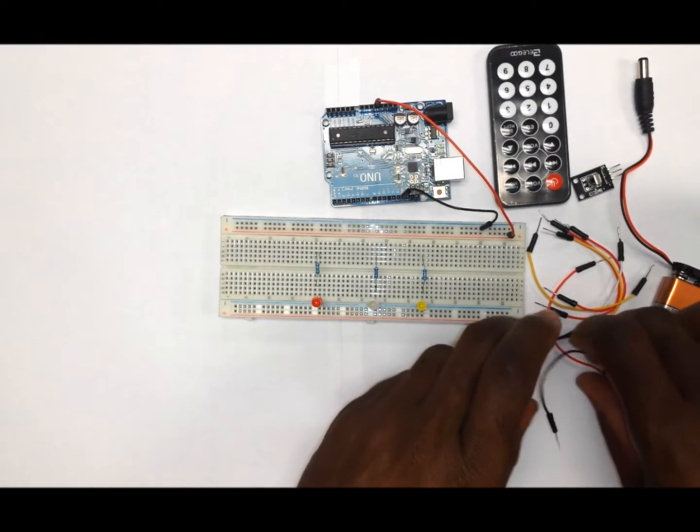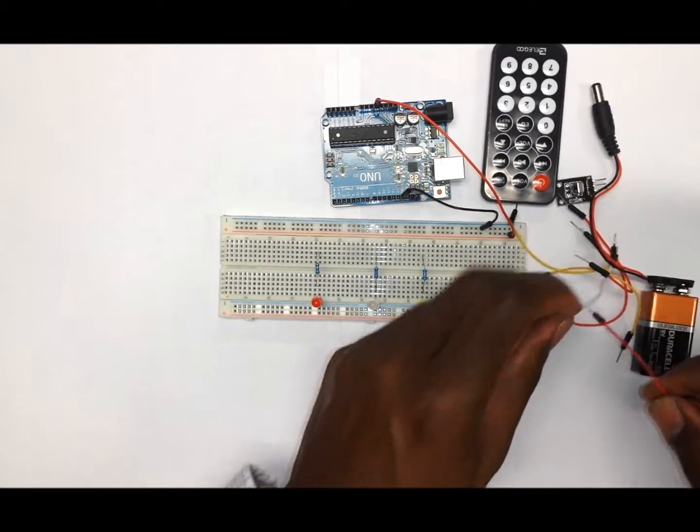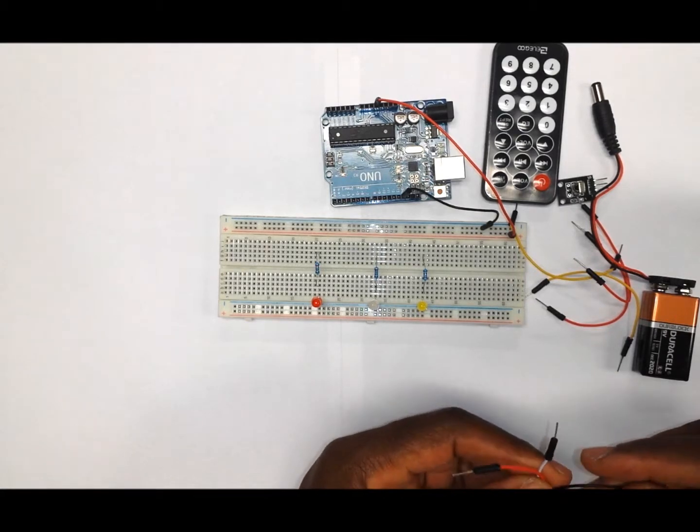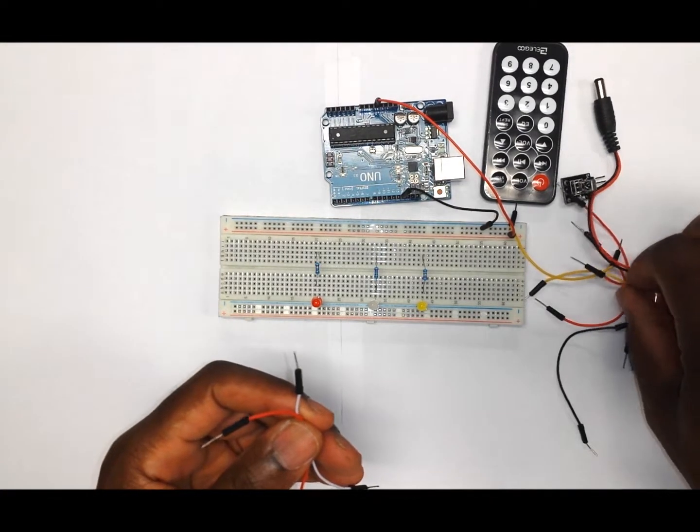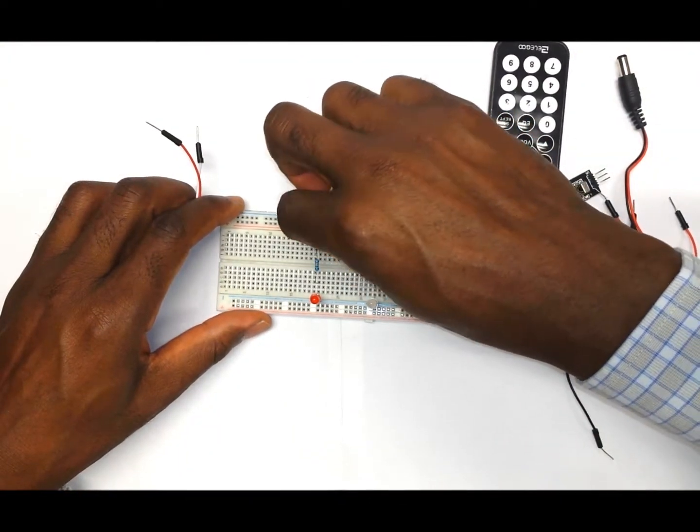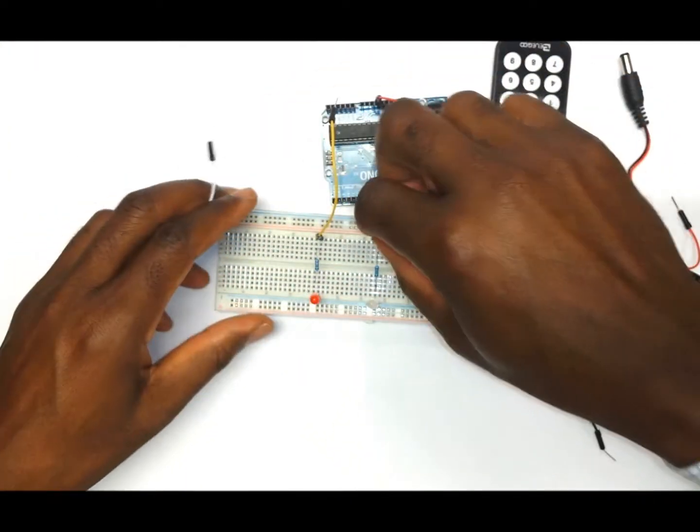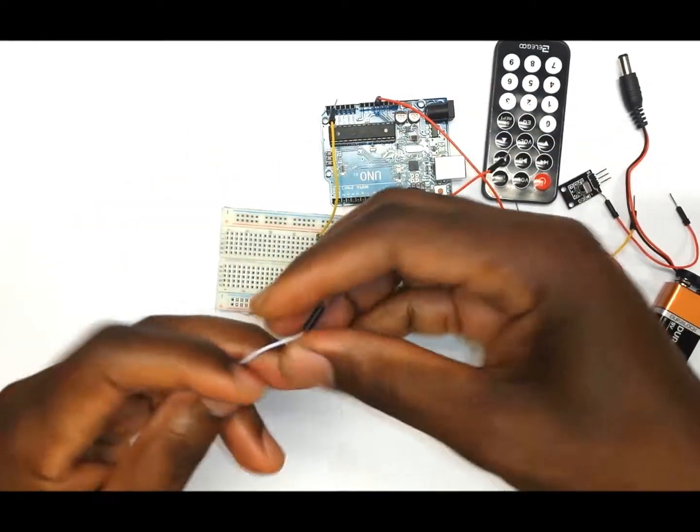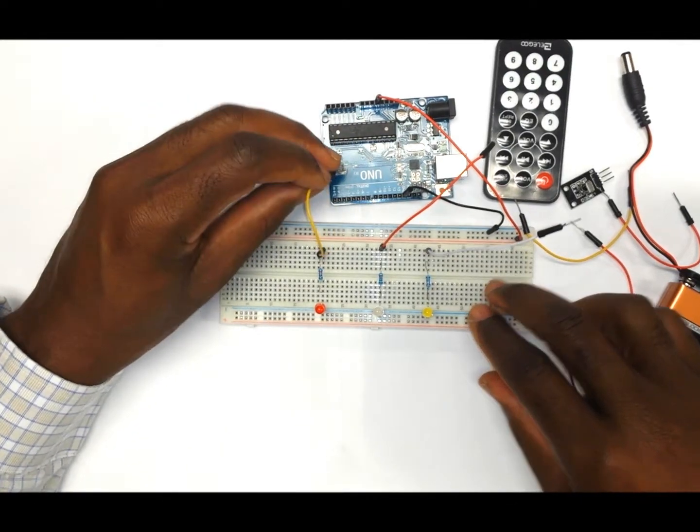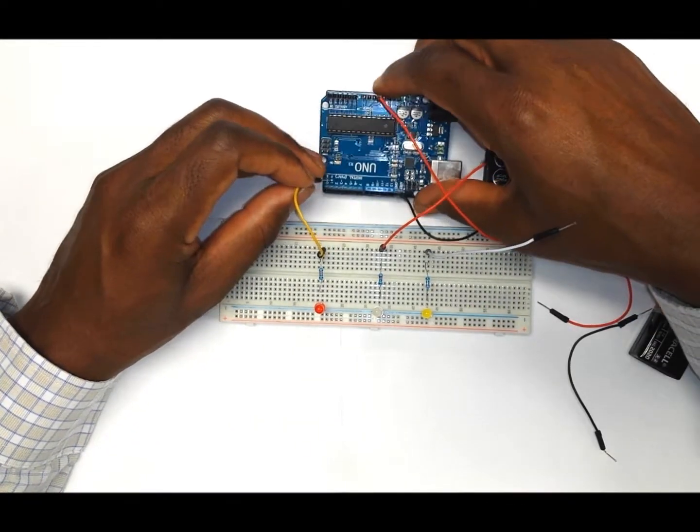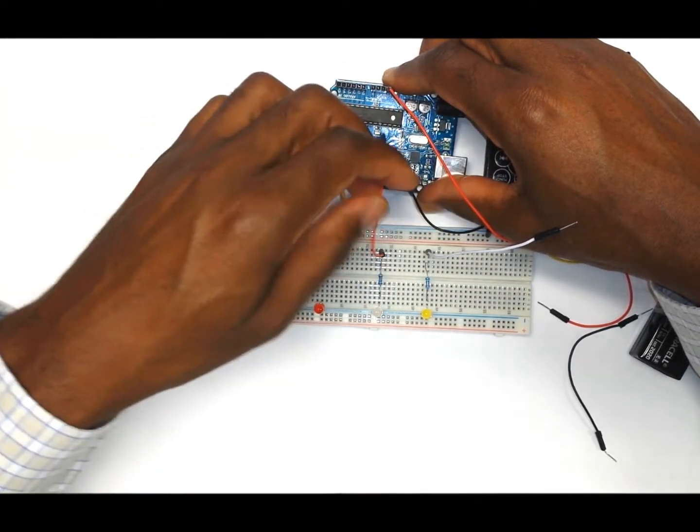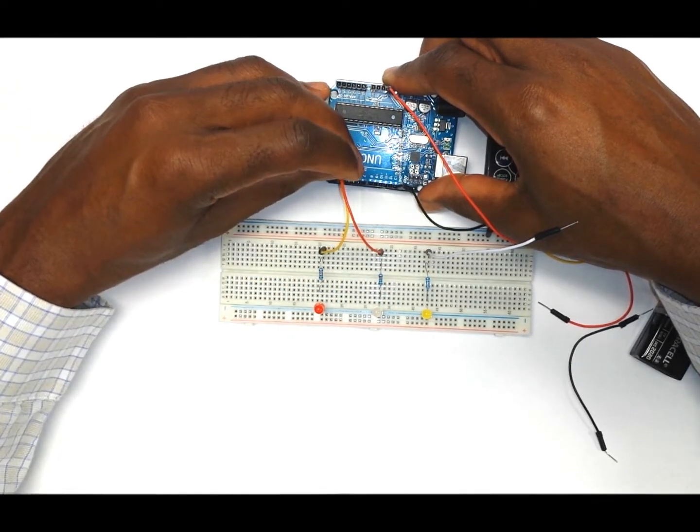The next thing that we want to do is to put the wires that are going to connect the LEDs to the Arduino. So we are going to need three wires. The first wire is going to go onto pin number two on the Arduino. The second wire is going to pin number three on the Arduino.